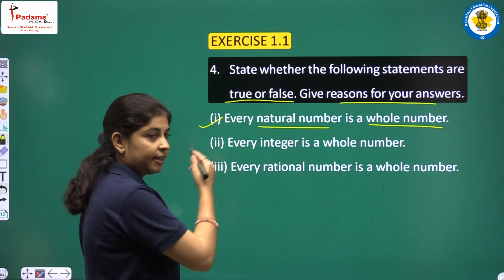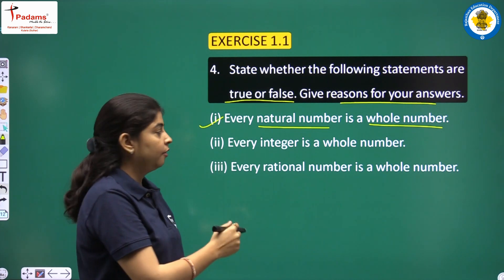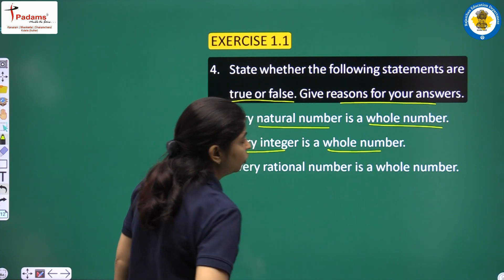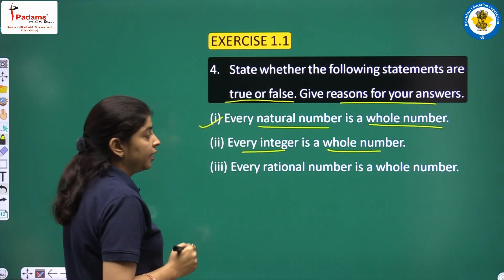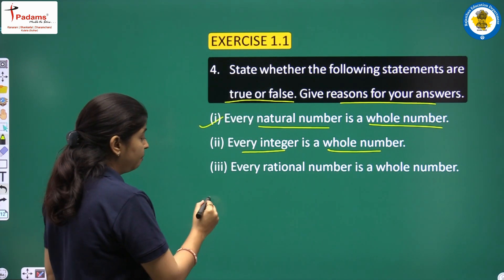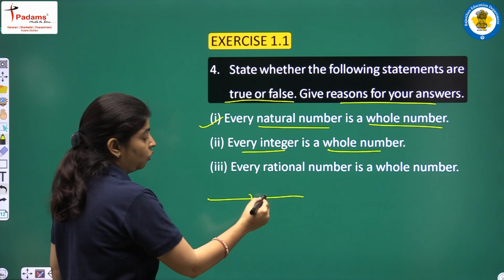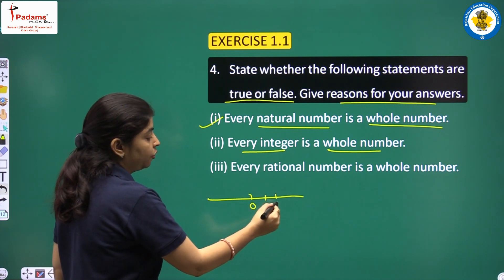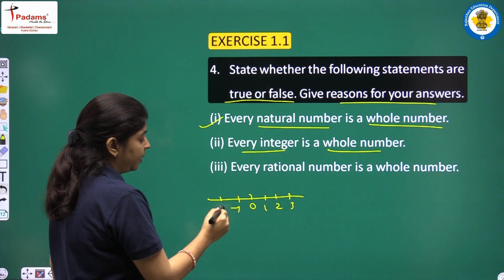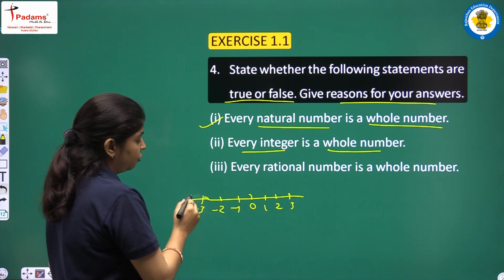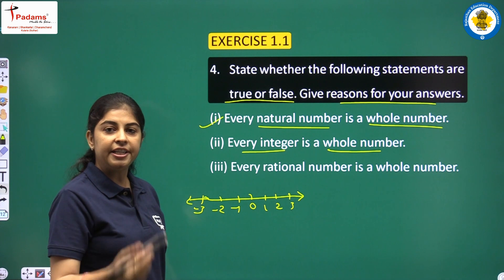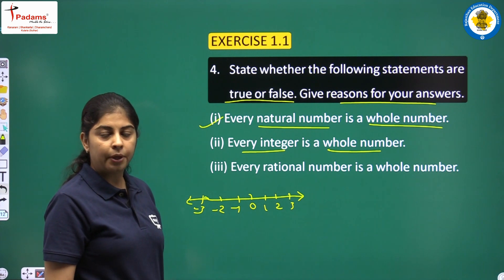Second statement: every integer is a whole number. Let's check — integers on the number line include 0, 1, 2, 3 but also minus 1, minus 2, minus 3 and so on. Negative integers are not whole numbers, so this statement is false.